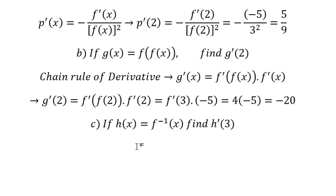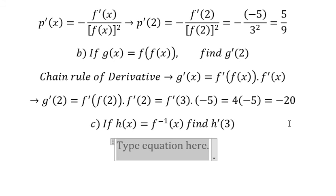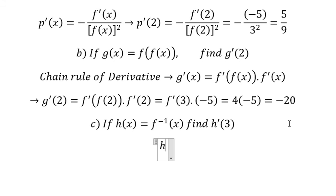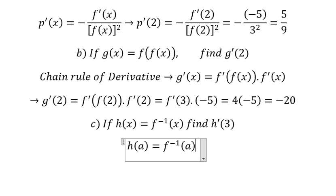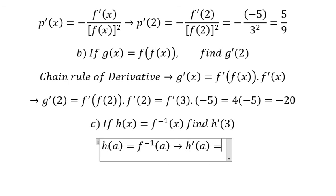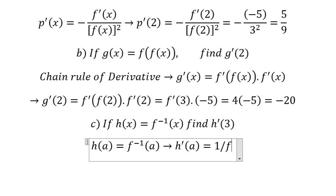Question number three. This is about the inverse function. So if we do the first derivative, the first derivative of the inverse function is equal to 1 over f prime of the original function at b.